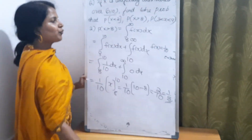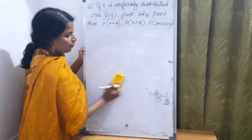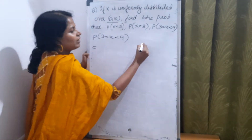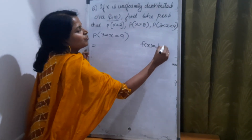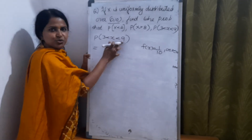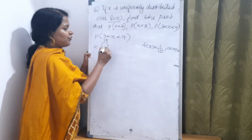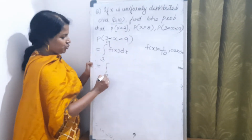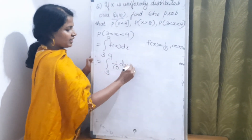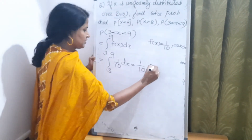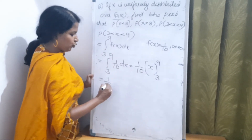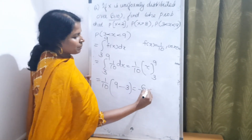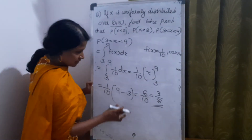One more part: P(3 ≤ X ≤ 9). Here f(x) = 1/10 for 0 ≤ x ≤ 10, and 3 to 9 is within this interval. So we compute the integral from 3 to 9 of (1/10) dx = (1/10) × [x]₃⁹ = (1/10) × (9 − 3) = 6/10 = 3/5.